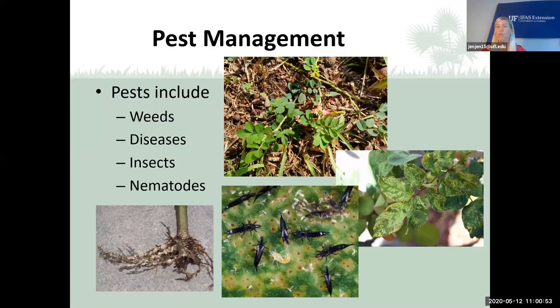Pest management in the landscape includes the control of weeds, diseases, insects, and nematodes. In the photos you can see a lot of weeds, a viral disease on a rose, thrips, and what root knot nematode does to the roots of your plants — all pretty devastating to plants.